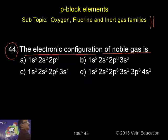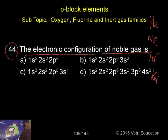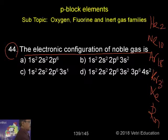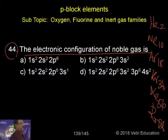Let me write: this is helium, neon, argon, krypton, xenon and radon. This is the order. So let me give you even the atomic numbers: 2, 10, 18, 36, 54, 86. This is the order.